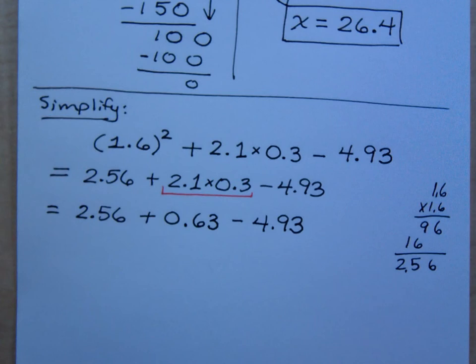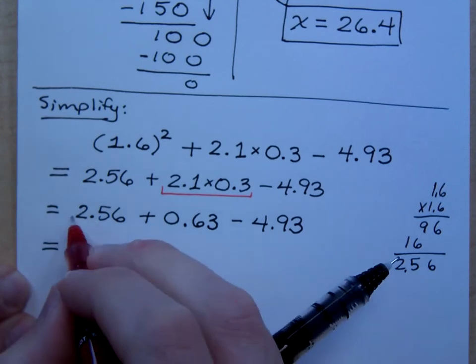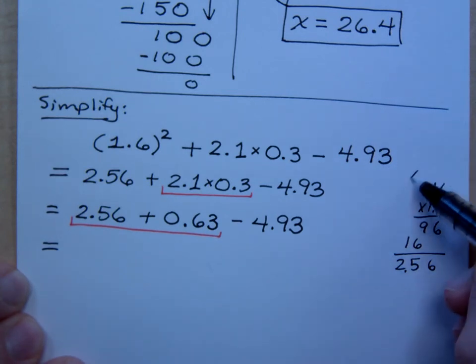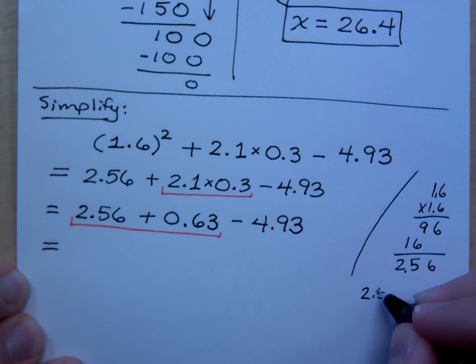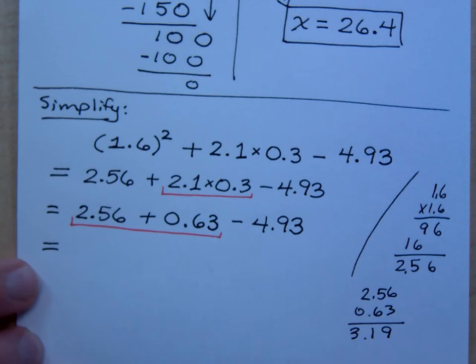So now all we have is addition and subtraction, just like you had on your quiz, right? So when I put all of this together, well how do you want to put this together? Maybe we just go ahead and add these first two guys right here. 2.56 plus 0.63. So let's see, 2.56, 0.63. So there's the 9, 1, 3. Is that what you got? So 3.19.